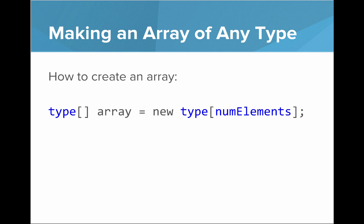So making an array of any type, the general form is that you write type open square bracket close square bracket, the name of the array equals new, then the type name, and then in between square brackets, the number of elements in the array.